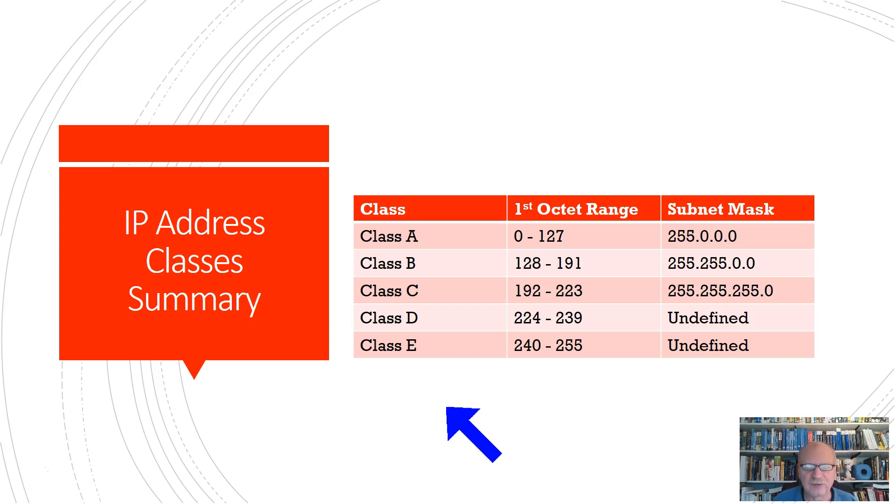All right, here is the summary then. Class A, 0 to 127 in the first octet, with a subnet mask of 255.0.0.0. Class B, 128 to 191, 255.255.0.0. Class C, 192 to 223, 255.255.255.0. And then, we will not be working with class D and E much, but class D is used for multicast. And you might be able to have to identify a class D IP address for one of the worksheets or for a quiz. But, after that, we will not be using them in this class for subnetting proper. And then, class E is anything else, and it's just undefined and used only for experimental purposes.